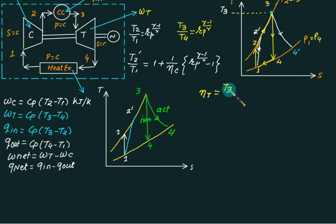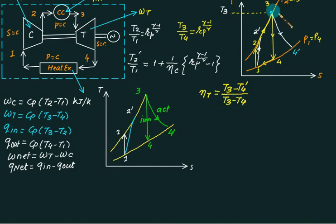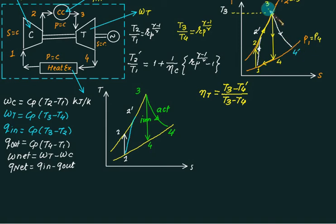Turbine isentropic efficiency eta_t equals (T3 - T4-dash) divided by (T3 - T4), where T3 - T4-dash is the smaller actual drop and T3 - T4 is the larger isentropic drop. To save steps, the goal is to calculate T4-dash directly from T3, skipping the intermediate isentropic calculation.